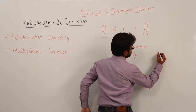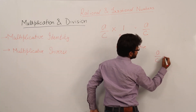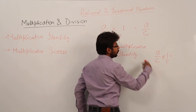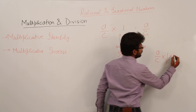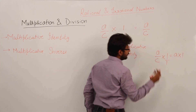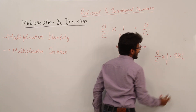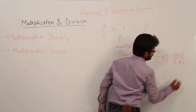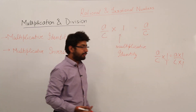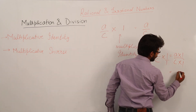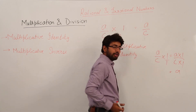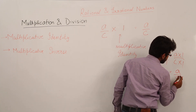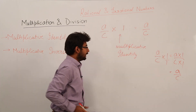For example, if I multiply a/c with 1, we can write 1 as 1/1. When we multiply, we multiply the numerators: a × 1, and in case of denominators, we multiply the denominators: c × 1. Since a × 1 = a and c × 1 = c, my answer is equal to a/c.